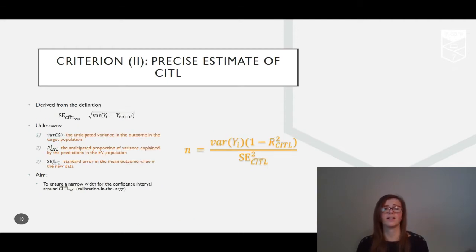The second criterion surrounds the calibration in the large. To calculate the sample size that gives a narrow width for the confidence interval around calibration in the large, we rearrange the formula for the standard error. This simply comes from the formula for standard error of the intercept term in a linear regression model, as this is essentially what calibration in the large measures. The only things we need to specify here are the variance of the outcome in the external validation data, the anticipated R-squared for calibration in the large, and the level of precision that we think is acceptable.